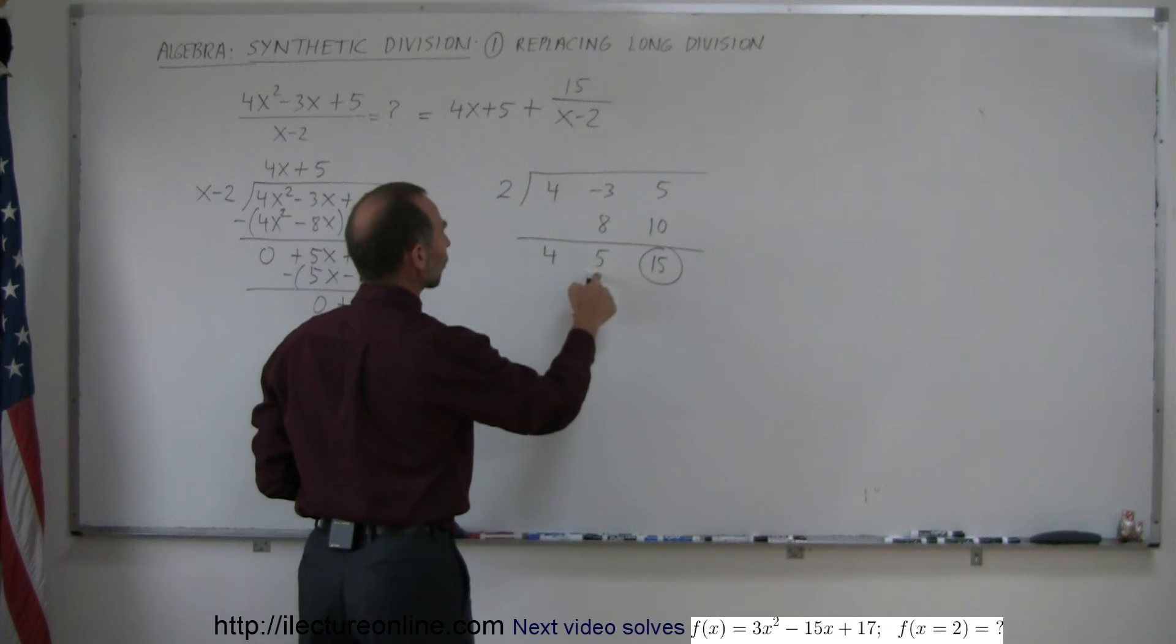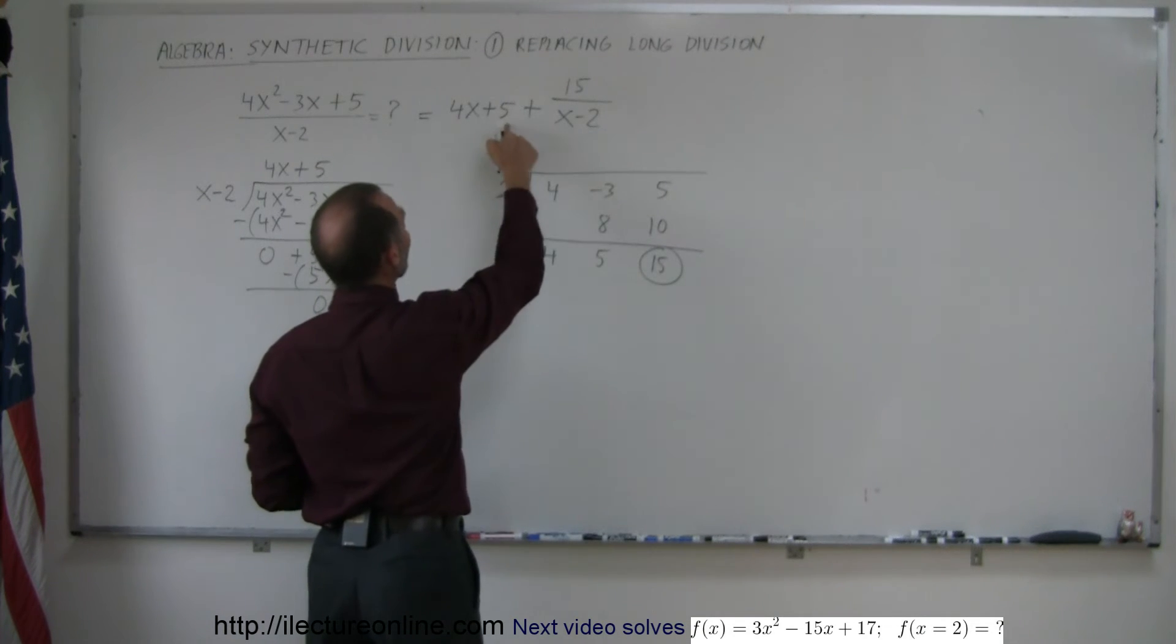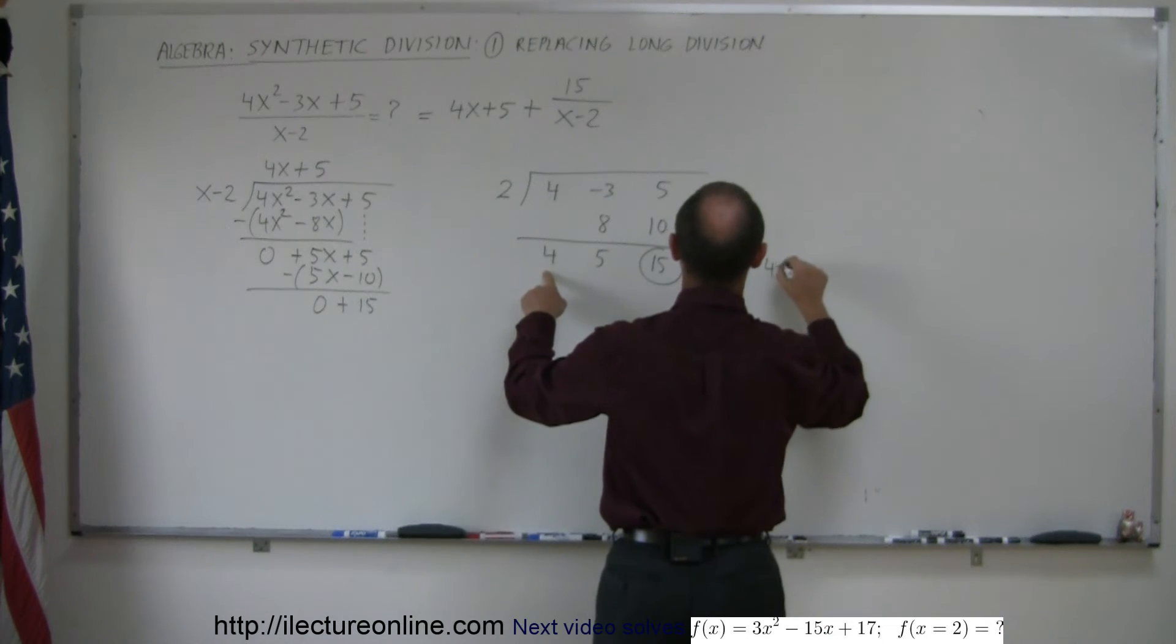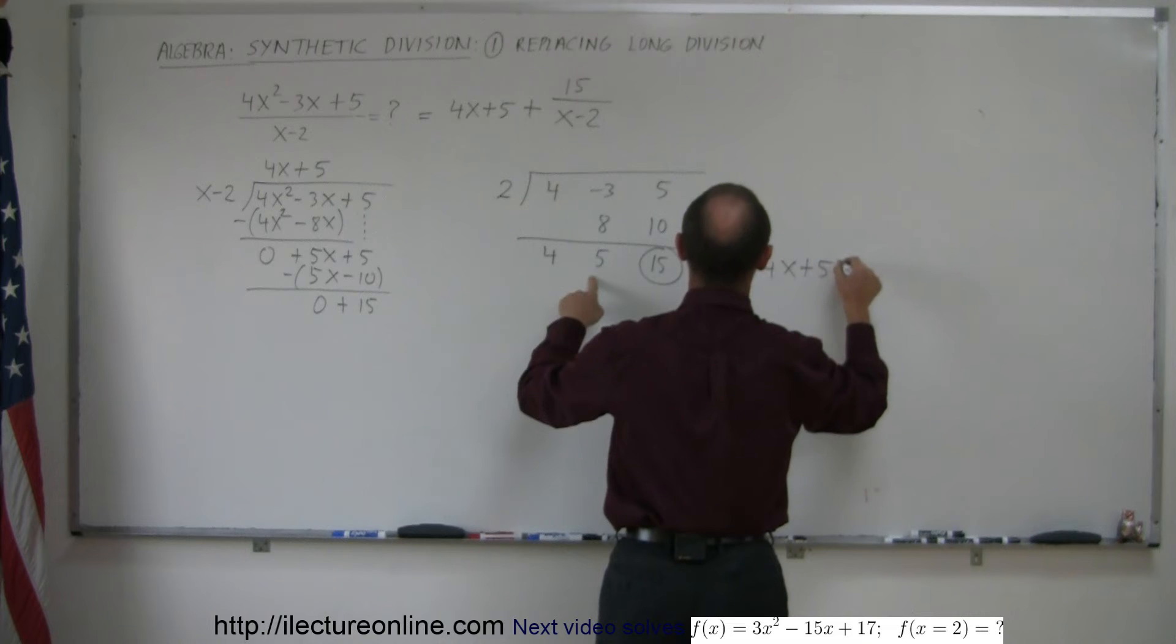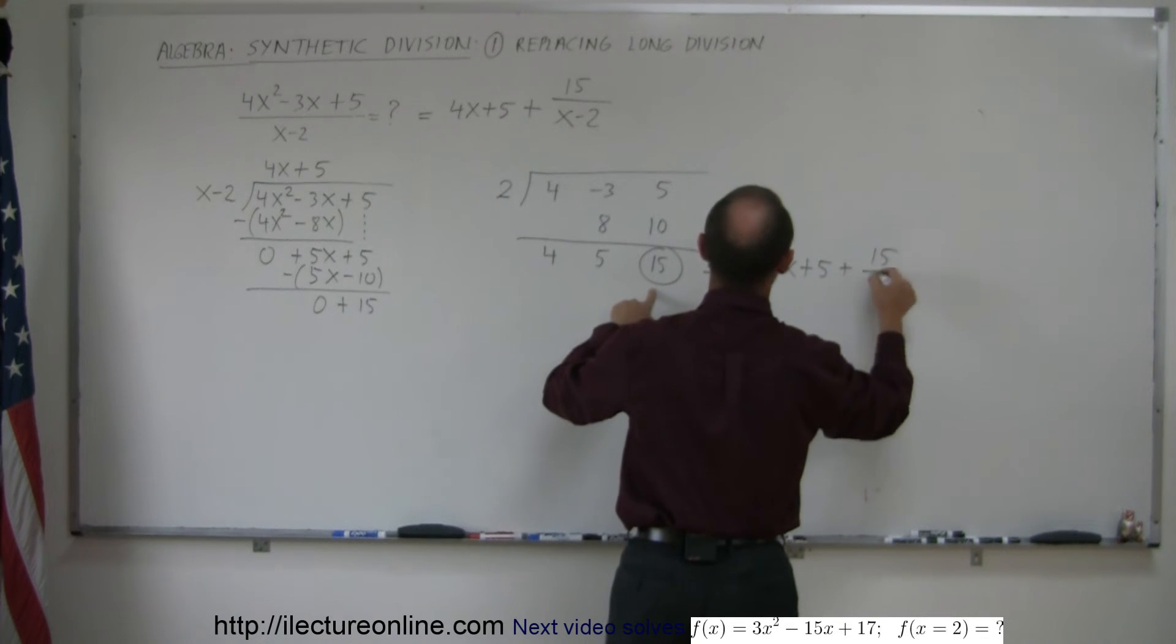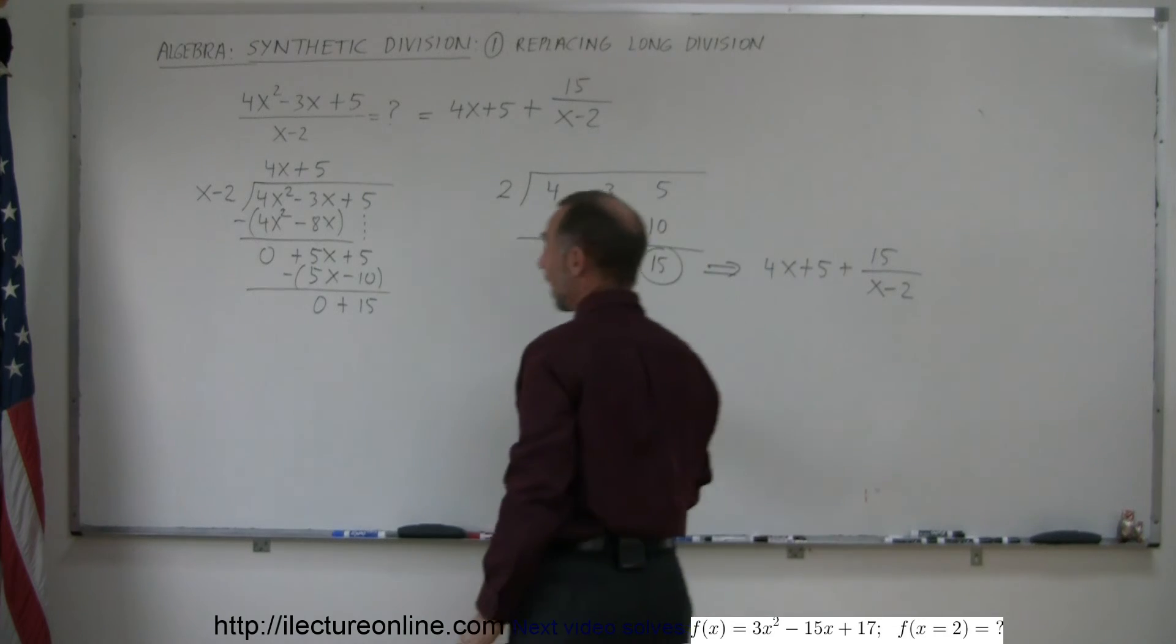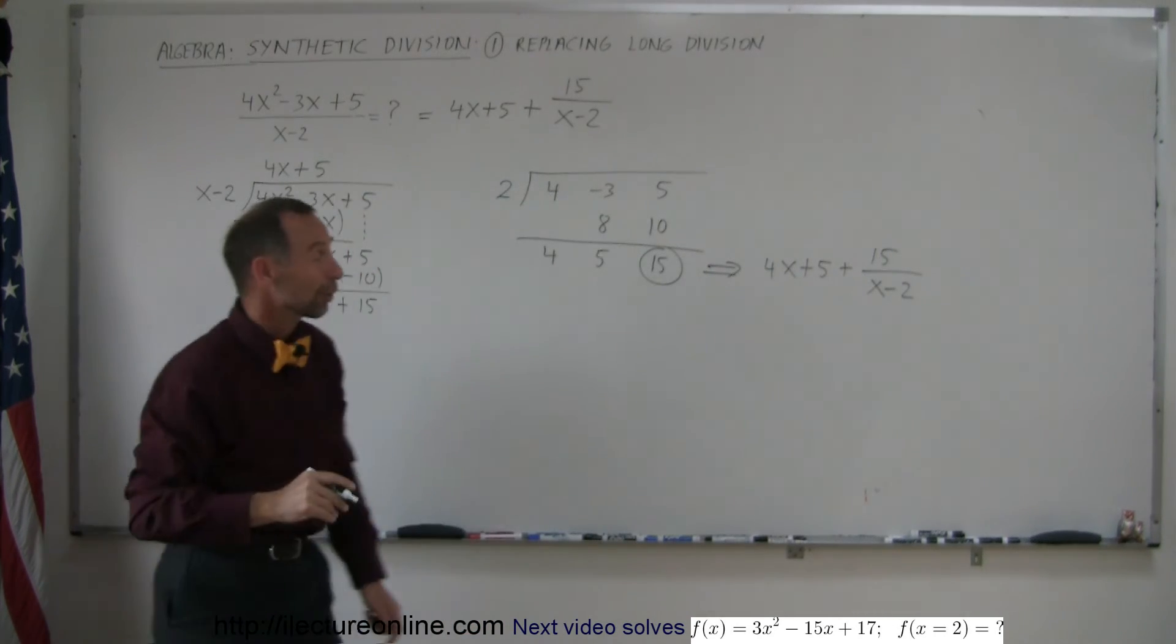And there's the coefficients of the first two terms with 4 and 5. So this then means that this is 4x plus 5 plus the remainder of 15 divided by the divisor of x minus 2. And you can see how this is a lot faster than doing longhand division.